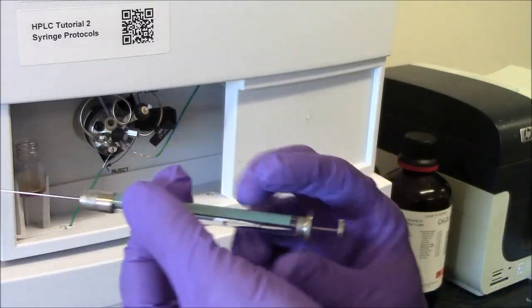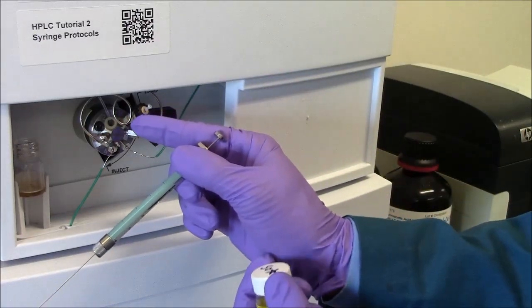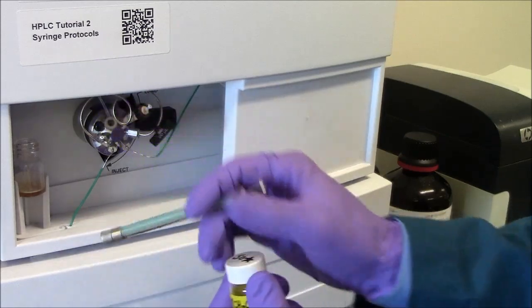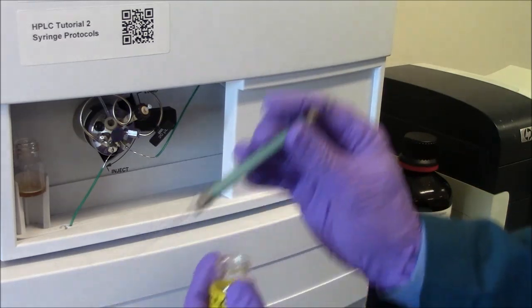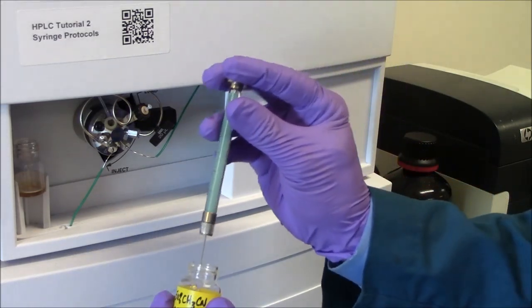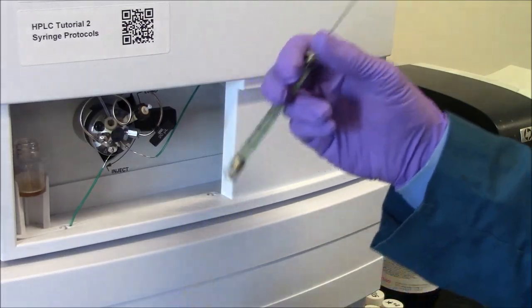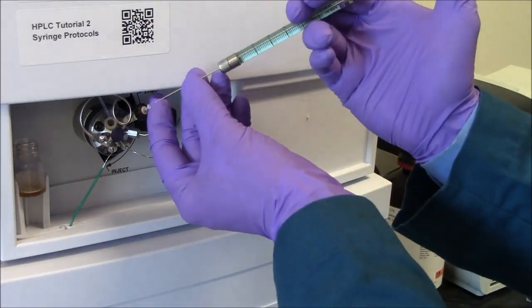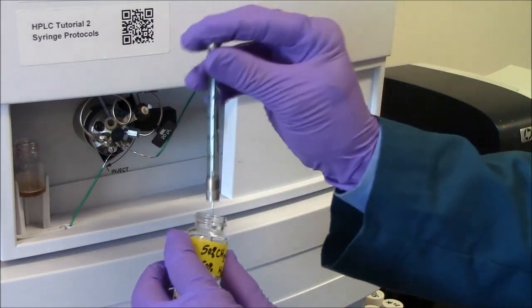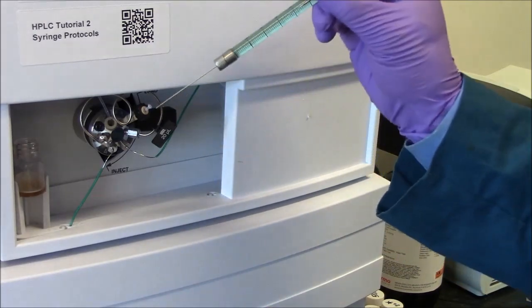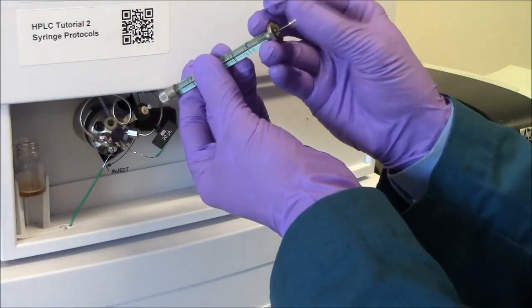This is a 50 microliters syringe, and I will now do what's called flushing the loop here. There's a loop here in which the sample that I want to run will be held, ready for it to be delivered to the column. I'm pulling up just 50-star here. This is 50-star, and I'll flush the loop by injecting once, twice, like so.